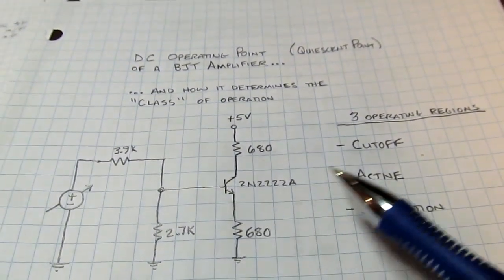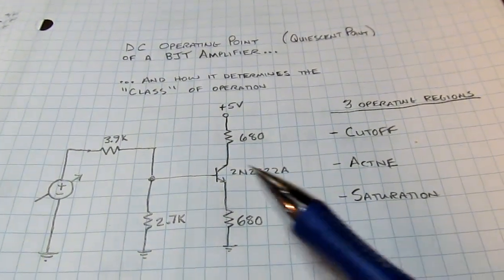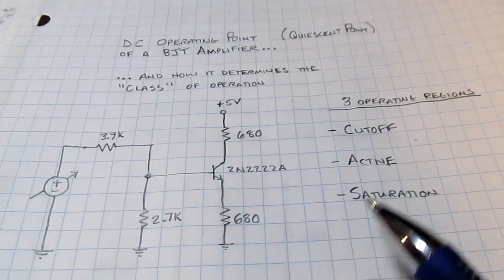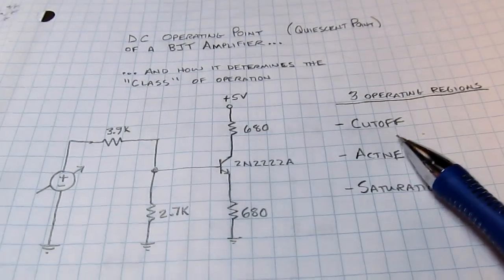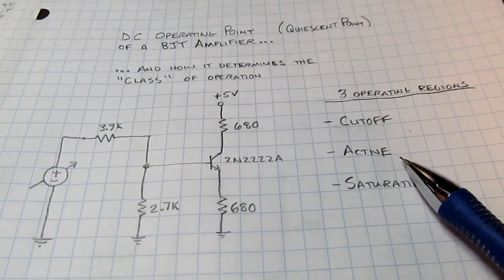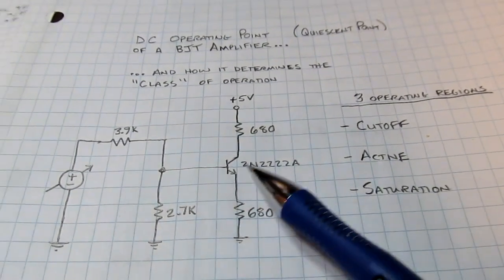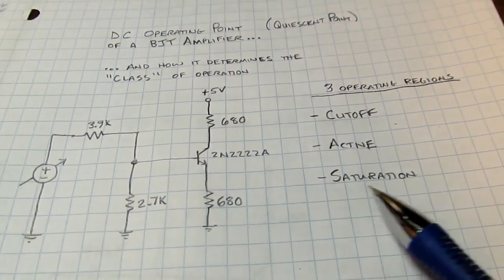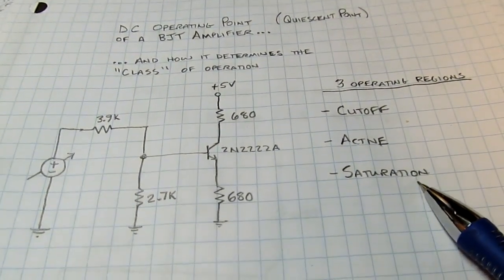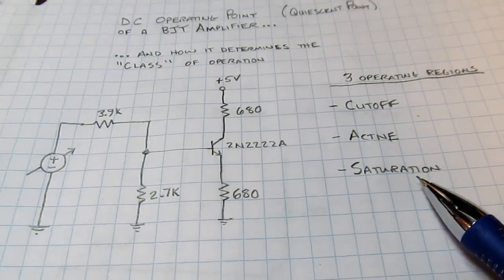There are really three basic regions of operation associated with bipolar transistors. The cutoff region is when the transistor is off, it doesn't have sufficient bias to turn on, no current is flowing. The active region is where it's typically used as an amplifier. The saturation region is when it's turned on really hard and is typically used as a switch.